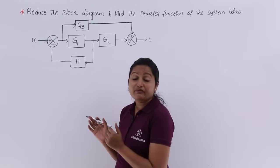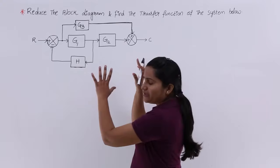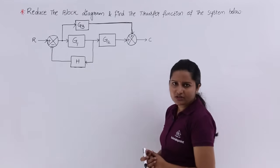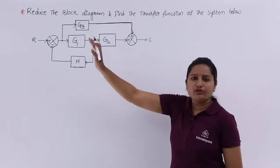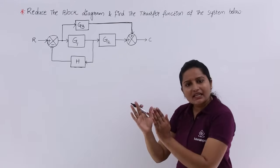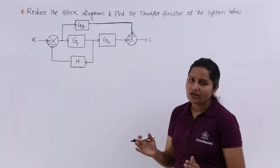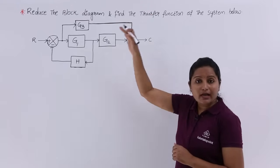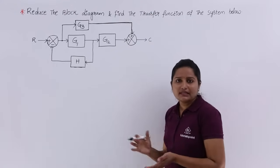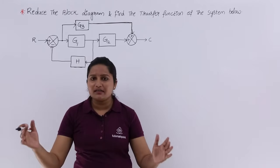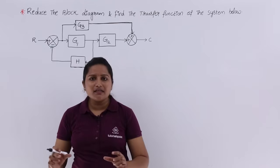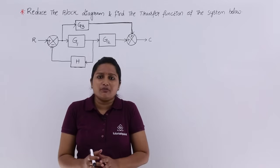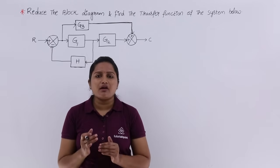We need to reduce this block diagram and find out the transfer function of the system. If you are having any single block in between C(s) and R(s), you can consider that as the transfer function of your system. But when you are having multiple blocks in between your input and output, you cannot directly state the transfer function. So we need to combine all these different blocks into a single block using block diagram reduction method.